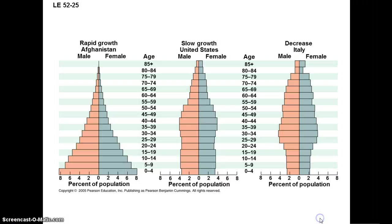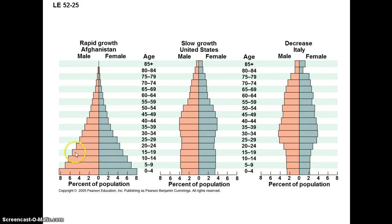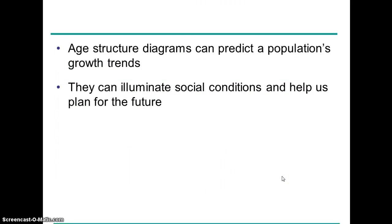These age structure pyramids can give an indication of the direction a country is heading. Afghanistan's pyramid shows a population that's going to grow quite a bit because of all the individuals who have yet to reach their reproductive years. The US shows a more stable growth pyramid, and Italy shows one that's in decline because of that tapering off at the bottom.